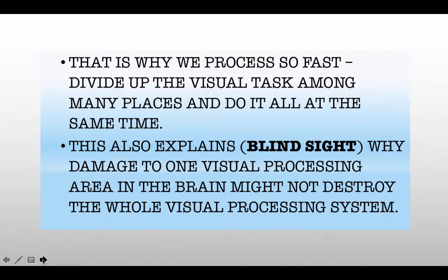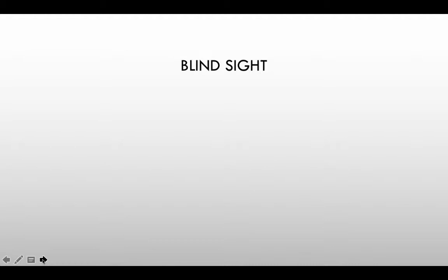This also explains an interesting phenomenon called blind sight. When our eyes function perfectly well and the information gets to our visual cortex, but one of those areas in our visual processing system gets damaged, we don't lose all of our visual processing — we just lose some of it. For example, we might not be able to recognize words even though they are right there in front of us, because our sight works but we're blind to certain features.